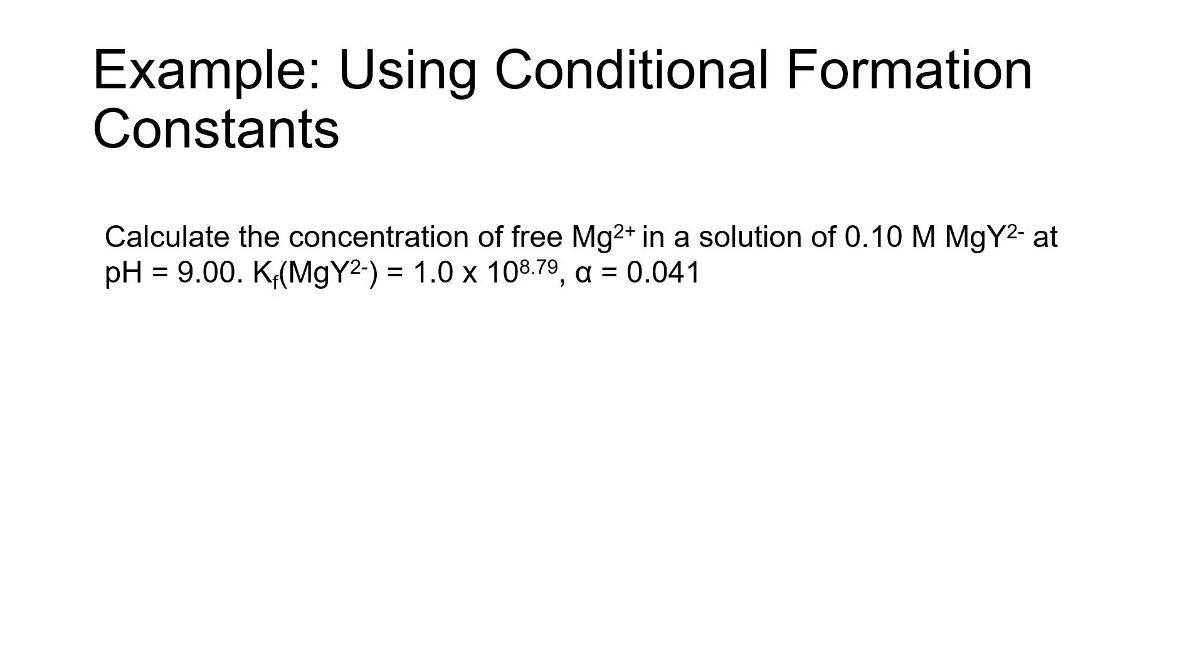This will be a similar example to what we looked at on Monday, except this time we're going to change our ion, which changes the value of the formation constant. We would like to calculate the concentration of free magnesium 2 plus in a solution of 0.1 molar magnesium EDTA complex at a pH of 9.